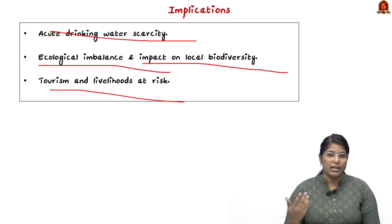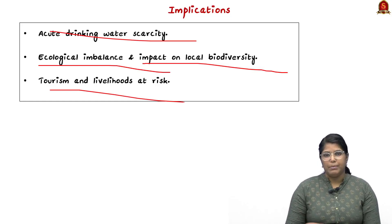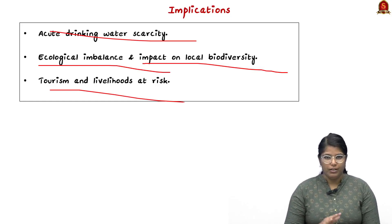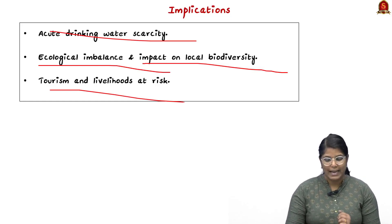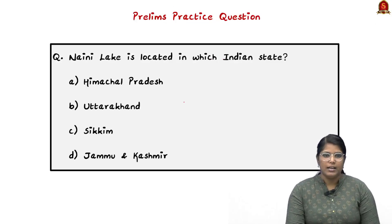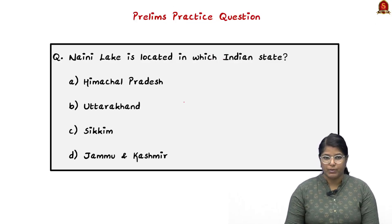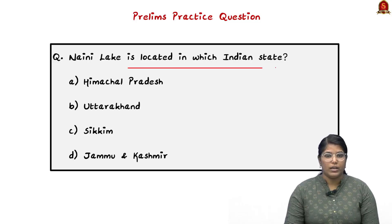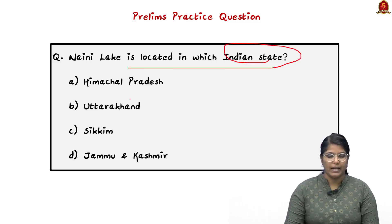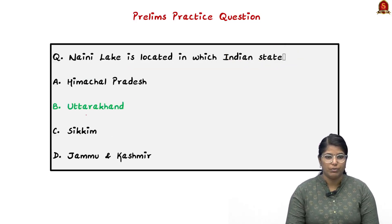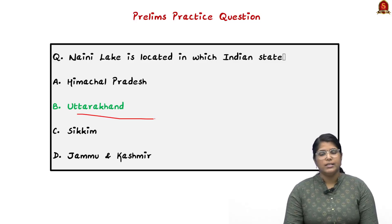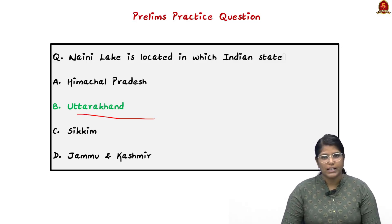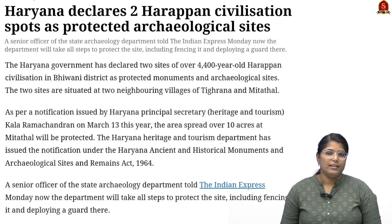These are the implications of the reduced water level in Naini Lake. A prelims question based on the discussion: Naini Lake is located in which Indian state? The correct answer is option B — Uttarakhand.